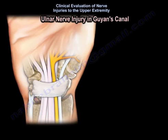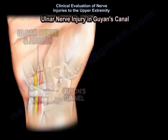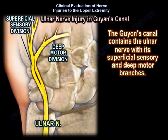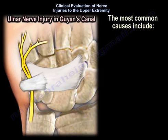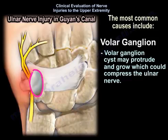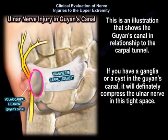Regarding injury of the ulnar nerve in Guyon's canal: Guyon's canal is approximately four centimeters long, and both the ulnar nerve and artery enter it. The canal contains the ulnar nerve with its superficial sensory and deep motor branches. Ulnar nerve compression neuropathy can occur here, with the most common cause being a volar ganglion cyst, which may protrude and grow to compress the nerve in this tight space, as shown in the illustration of Guyon's canal in relation to the carpal tunnel.